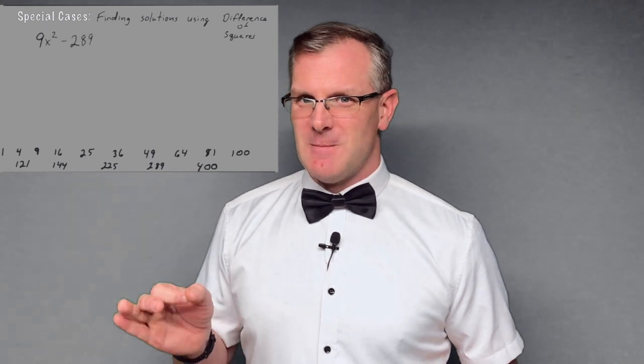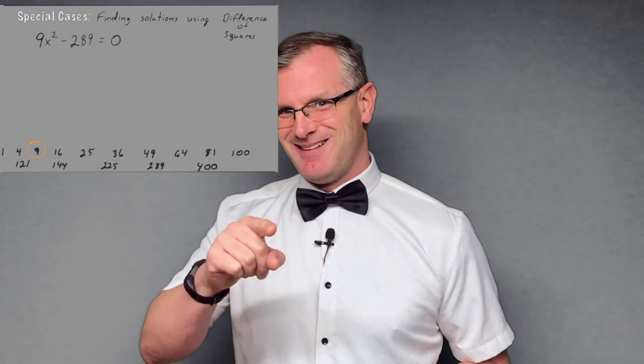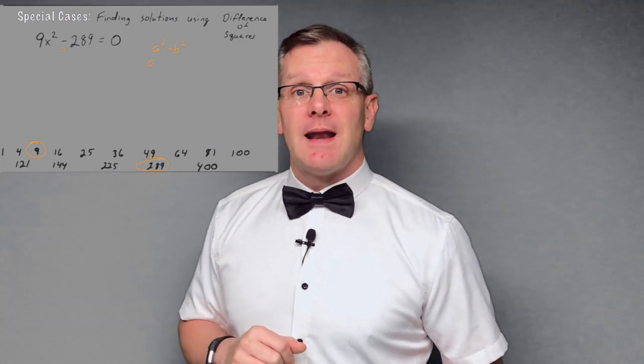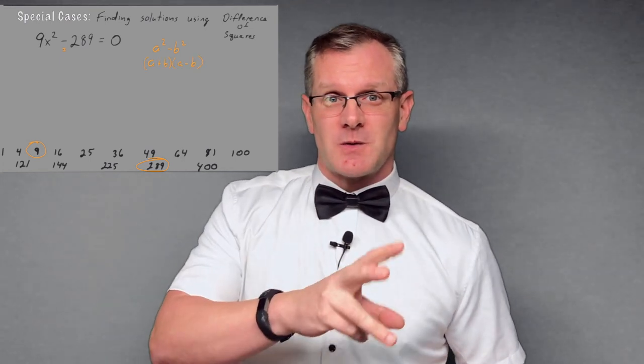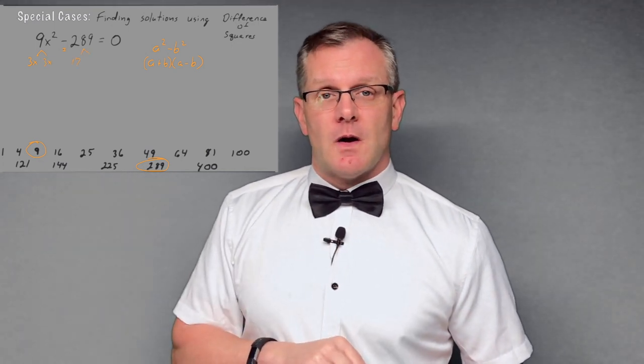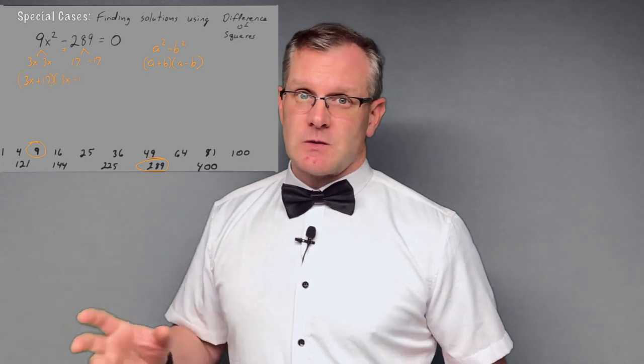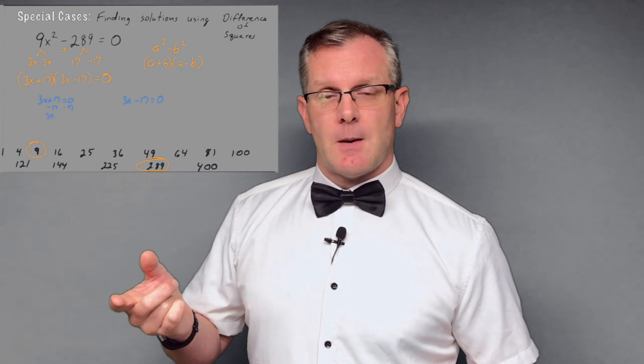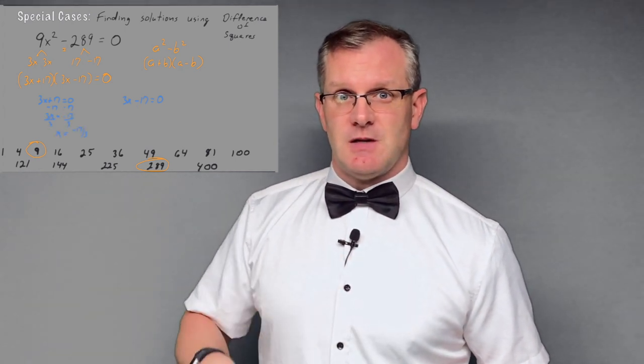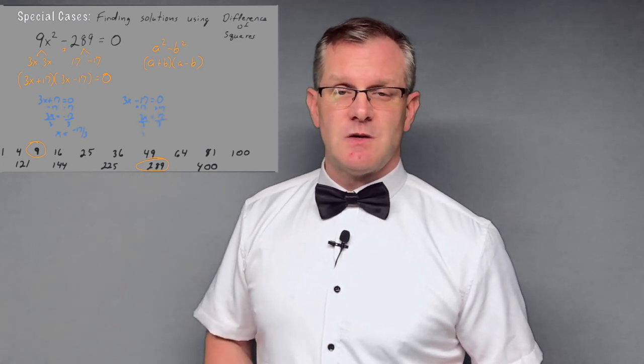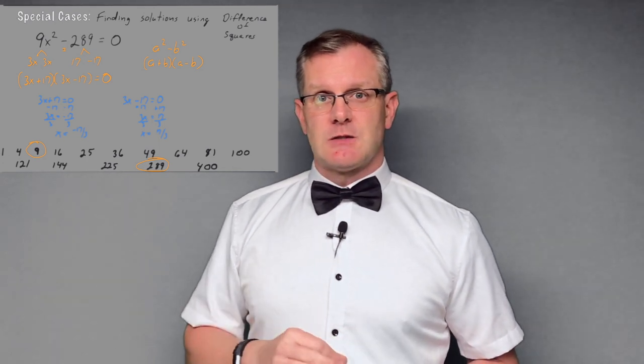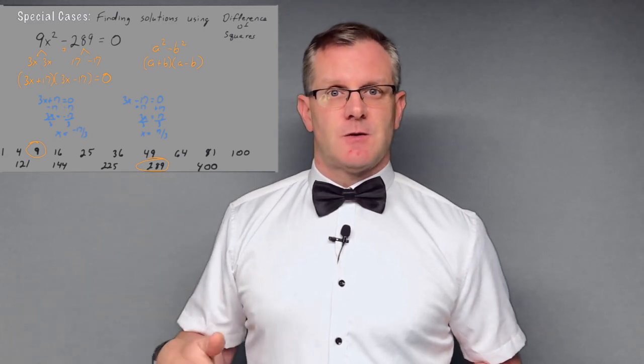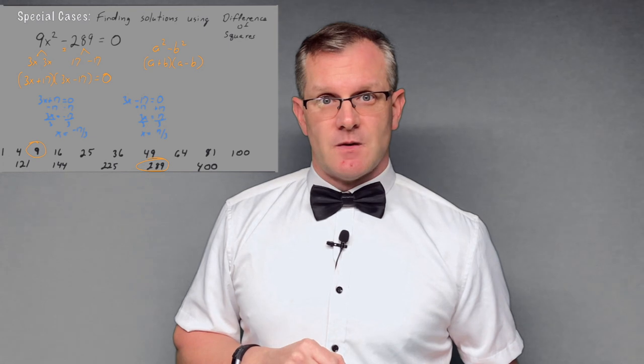Just in case you thought that I was going to leave out an A term that's not one, here we go. Our A term in this case is nine. 9X squared minus 289. You knew you weren't going to escape a 289 in this video. 9X squared minus 289 equals zero. Perfect square in the front, perfect square in the back. 9X squared is 3 times 3. 289 square root of that, 17 and 17. So we got positive 17, negative 17. This factors out into 3X plus 17, 3X minus 17. Set each piece equal to zero. And we end up with answers of 17 thirds and negative 17 thirds. Once again, our zeros are opposites.